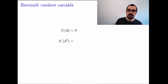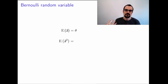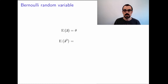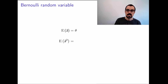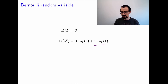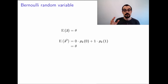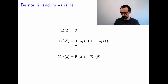Now let's compute the variance of some parametric distributions. The strategy is always the same: we know the mean from a previous video, so we compute the mean square and subtract the square of the mean. For a Bernoulli random variable, the variable can be 0 or 1 — 0 with probability 1 minus theta, 1 with probability theta. The mean square is just theta. So the variance is theta minus theta squared, which equals theta times (1 minus theta).